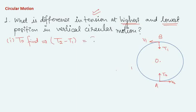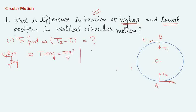We need to find t2 minus t1 — the difference in tension. At point B, the velocity is v1, tension is t1, and mg acts downward. The radial equation of motion gives: t1 plus mg equals m·v1²/r. Similarly, at point A, mg acts downward and tension t2 is upward. The radial equation gives: t2 minus mg equals m·v2²/r.